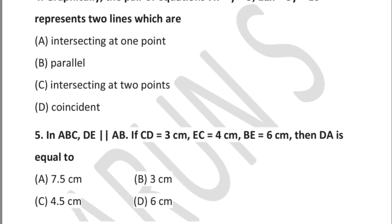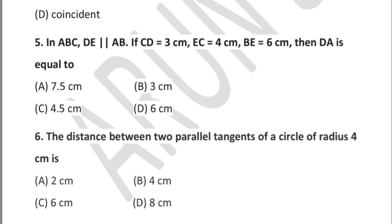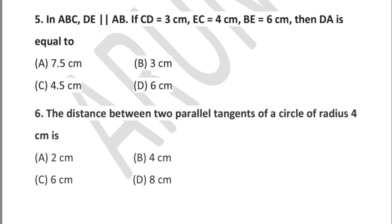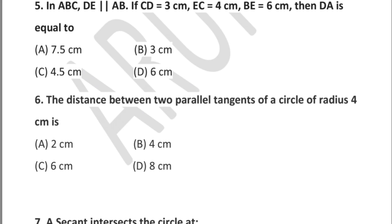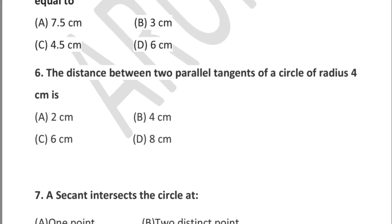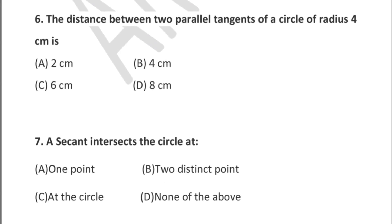Question 5: in triangle ABC, DE is parallel to AB. If CD = 3 cm, AC = 4 cm, and BC = 6 cm, then the value of DA is equal to — option A: 7.5 cm, option B: 3 cm, option C: 4.5 cm, option D: 6 cm.